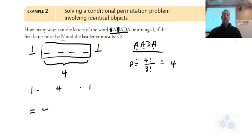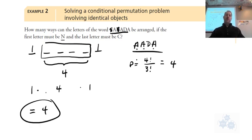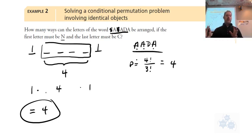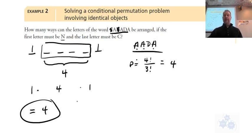So the total is one times four times one — four different arrangements. With those restrictions you take the two fixed letters out, and the middle has only four different ways it can be arranged. The textbook actually lists those four different ways if you're interested.